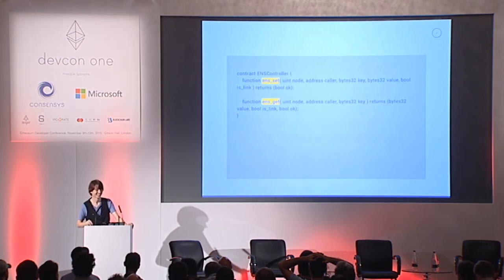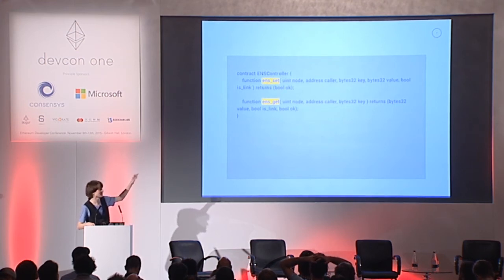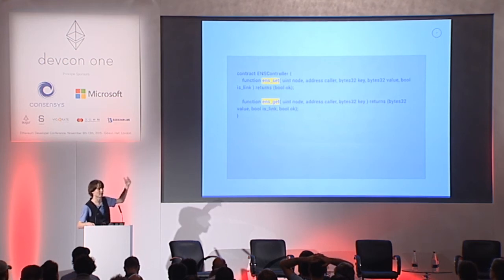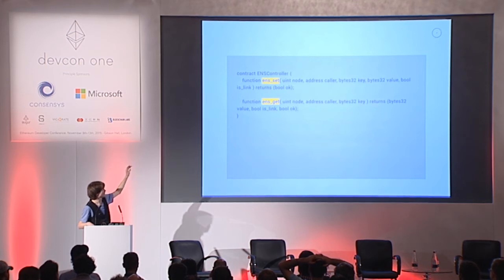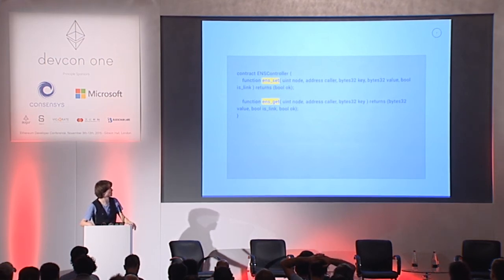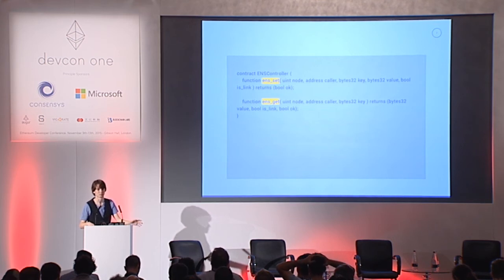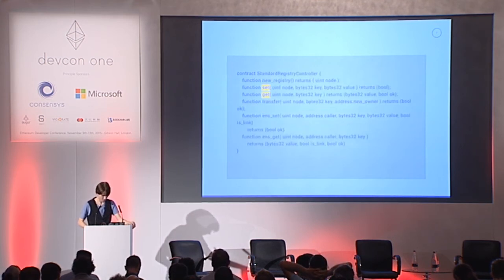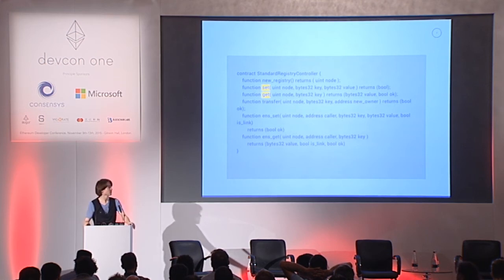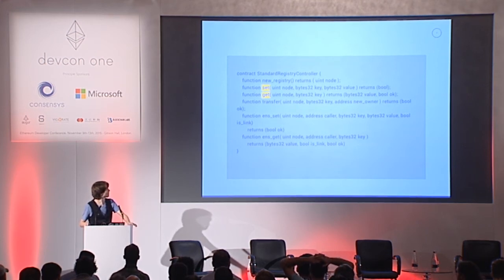This is the ENS controller interface, and the only thing that interacts with ENS controllers is the ENS app. So when you're writing an ENS controller, you need to make sure it's permissioned so that only the ENS app can interact with those two functions. It takes a node, an address — that's the caller making the request — the key and the value to be stored, as well as the isLink boolean. It should return false if the caller doesn't have the right permissions or if the request doesn't make sense for the given path. To make your life easier, we've implemented a couple of controllers for you to look at.